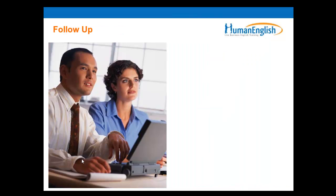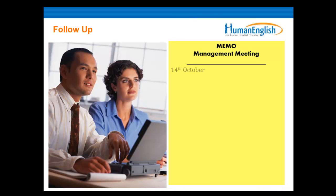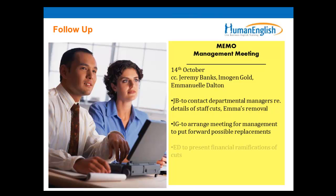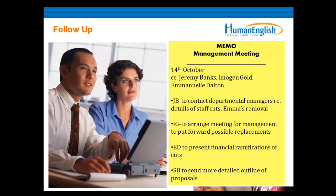We can also have a follow-up memo. As you can see here, we have a follow-up memo to the meeting with the date, the participants, and with all of the tasks that are allocated to the participants. So it outlines the role of each participant for their action points, which they need to do after the meeting. Jeremy Banks is to contact departmental managers regarding the details of the staff cuts and MS removal. Imogen Gold's task is to arrange a meeting for management and put forward possible replacements. Emmanuel's action point is to present the financial ramifications of cuts. And Sylvia's action point is to send a more detailed outline of proposals. You can also have a follow-up memo listing all the action points allocated to each of the members.